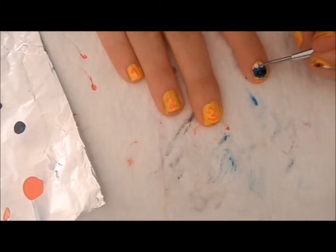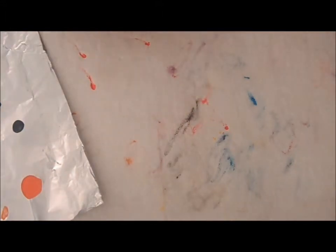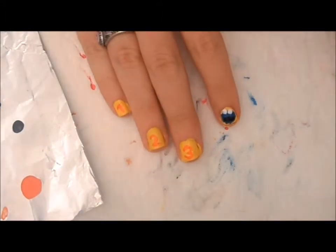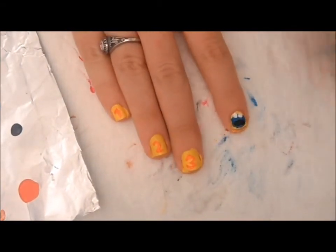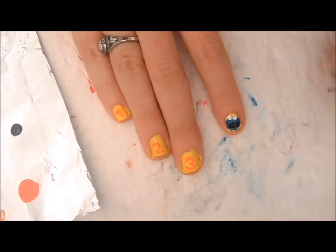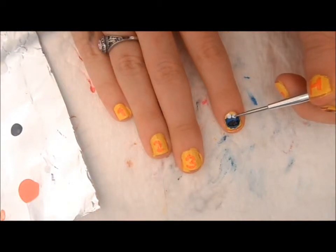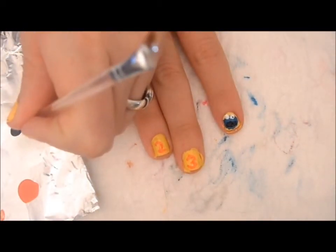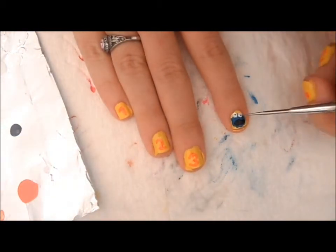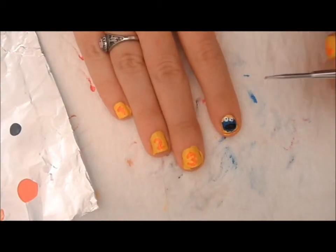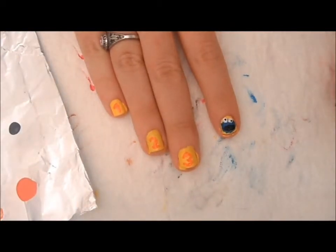With Cookie Monster, you have to make his pupils going different directions because that's just how he looks. He's cuckoo for cookies and he always has that cuckoo for cookies look. So you're going to put one down a little lower and then one kind of a bit higher and more centered, just so they're looking in different directions. And you have Cookie Monster!